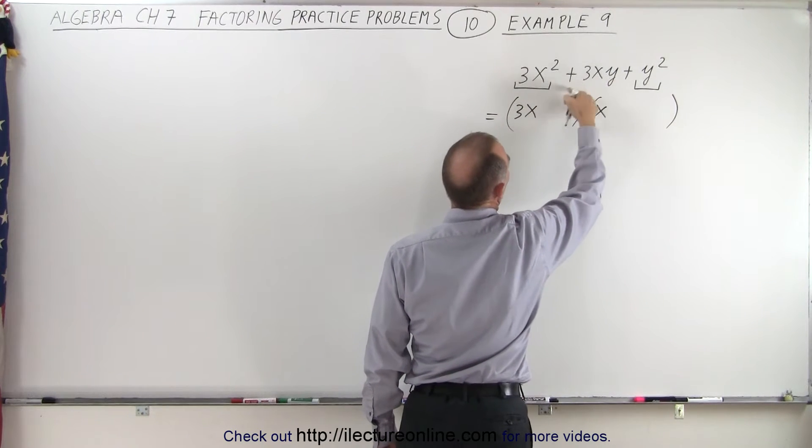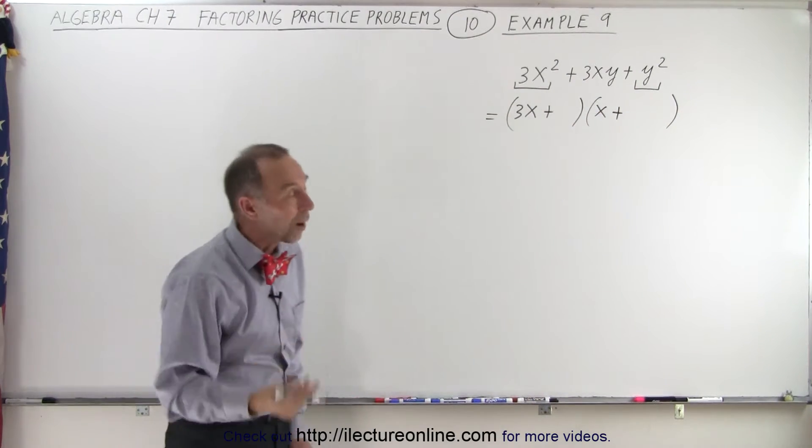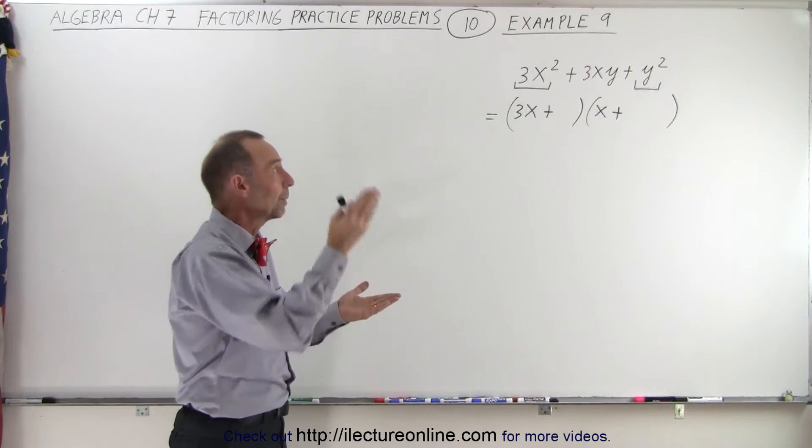Notice that all the signs are positive, which means we need positives. And now we look at the last term, which is y squared. The only way in which we can get y squared is we'll multiply y times y.